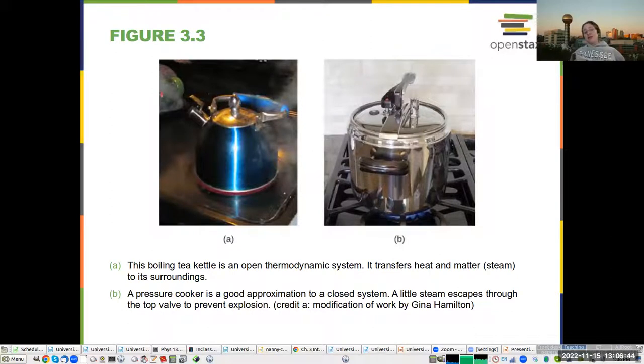So, a tea kettle is an example of an open system. It allows heat and matter to go in and out. A pressure cooker is really close to a closed system, although there's always this little escape valve so that you don't blow the entire thing up, and actually pressure cookers used improperly can be quite dangerous.